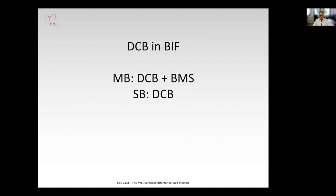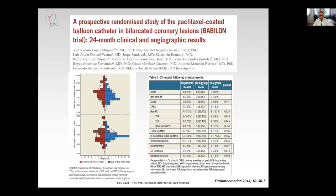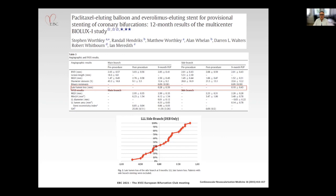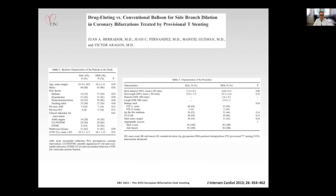What about drug-coated balloons and bifurcation lesions? We have different scenarios here. One initially investigated was DCB plus a metal stent in the main branch and DCB in the side branch. It turned out that this is not a good idea. In general, the combination of DCB with a newly implanted stent, especially a metal stent, leads to inferior results compared to a drug-eluting stent. The next scenario in bifurcation is using a drug-eluting stent in the main branch and treating the side branch with a DCB. Here we have registry and randomized data for this approach.